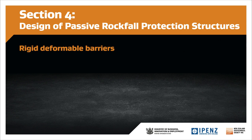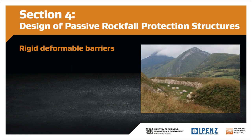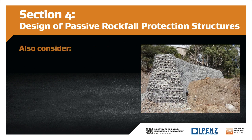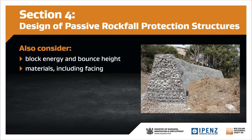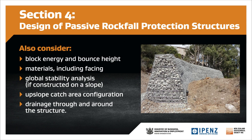The next type are rigid deformable barriers. Reinforced earthen embankments, or bunds, are the most commonly used types of these structures. Unlike rockfall fences, these types of barriers do not have an energy rating. They are designed by estimating the penetration depth of the impacting block and by sizing the barrier based on an allowable deformation. For these, you need to consider block energy and bounce height, construction materials including facing, global stability analysis if built on a slope, upslope catch area configuration, and stormwater drainage through and around the structure.